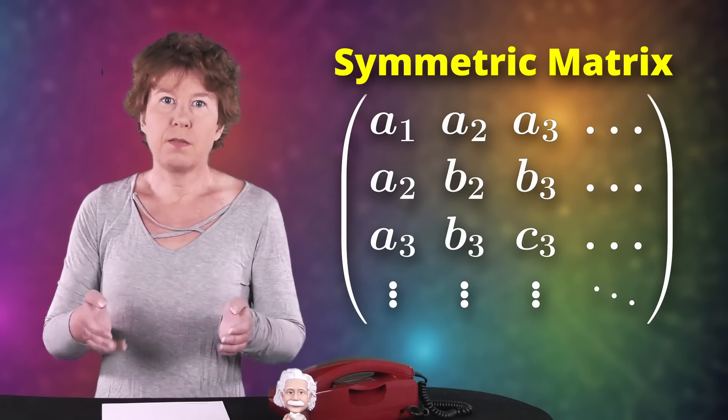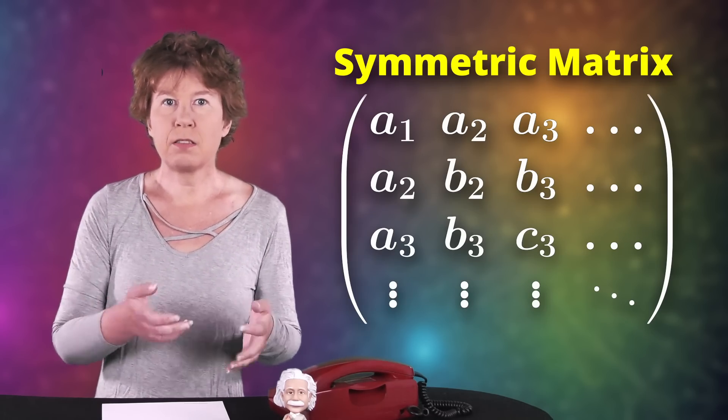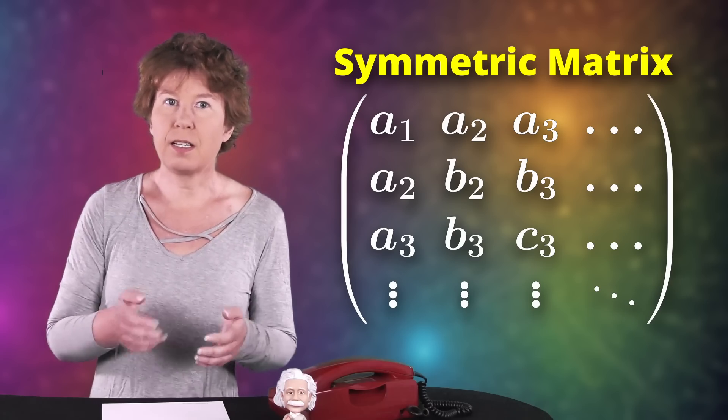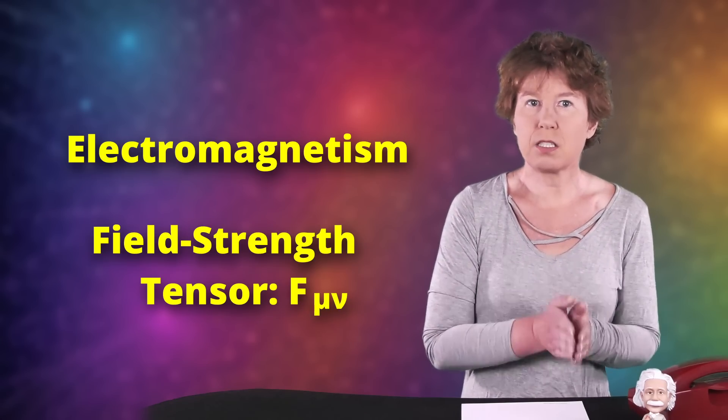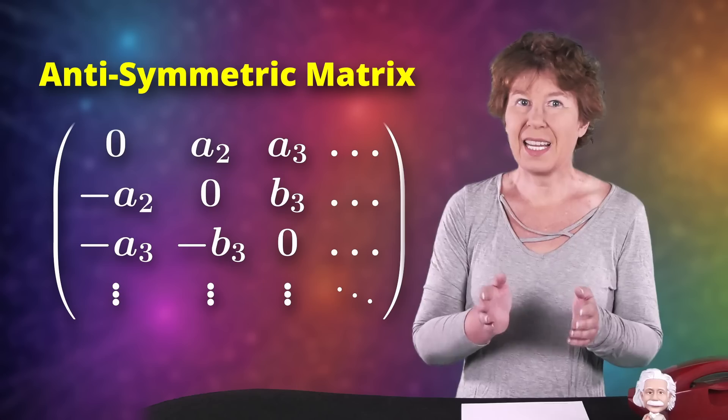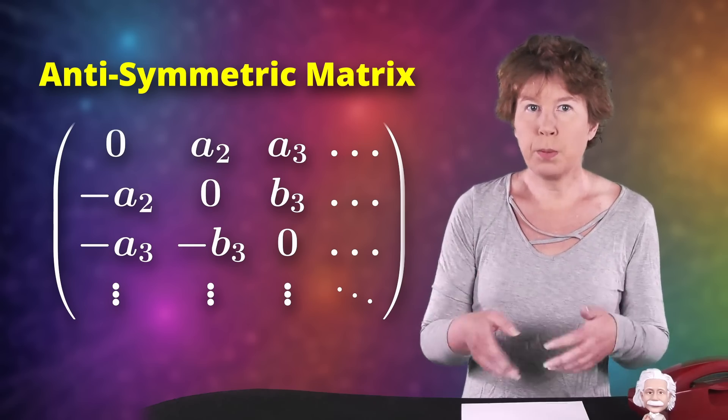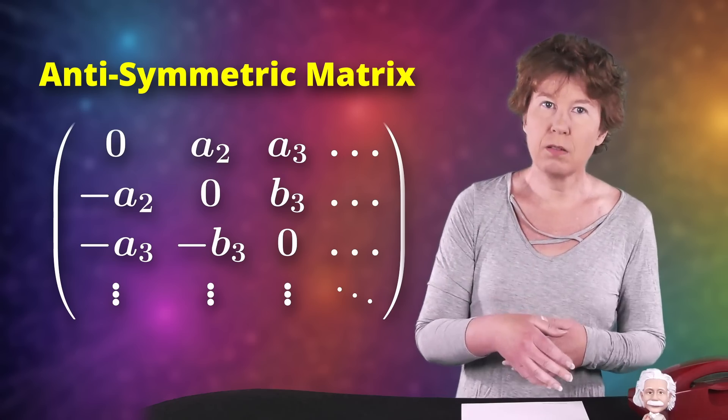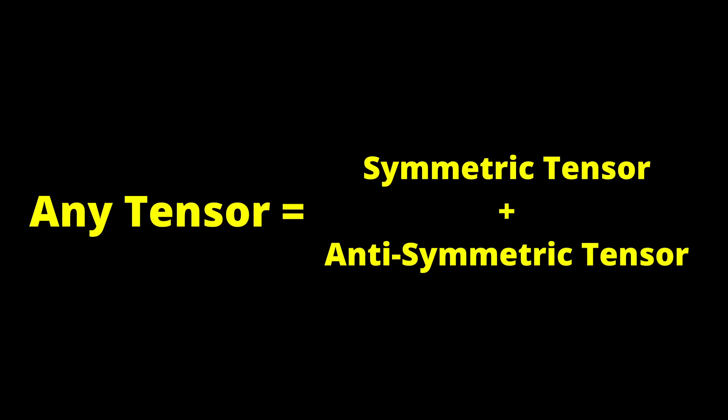I know this is somewhat technical, but in general relativity, spacetime is described by a two-tensor — basically a glorified matrix. This matrix is symmetric, meaning the entries above the diagonal are the same as those below. In electromagnetism, you have instead something called the field strength tensor, which is anti-symmetric: the entries above the diagonal are the same as those below multiplied by minus one. Now, if you have an arbitrary two-tensor, you can take it apart into a symmetric and an anti-symmetric part.